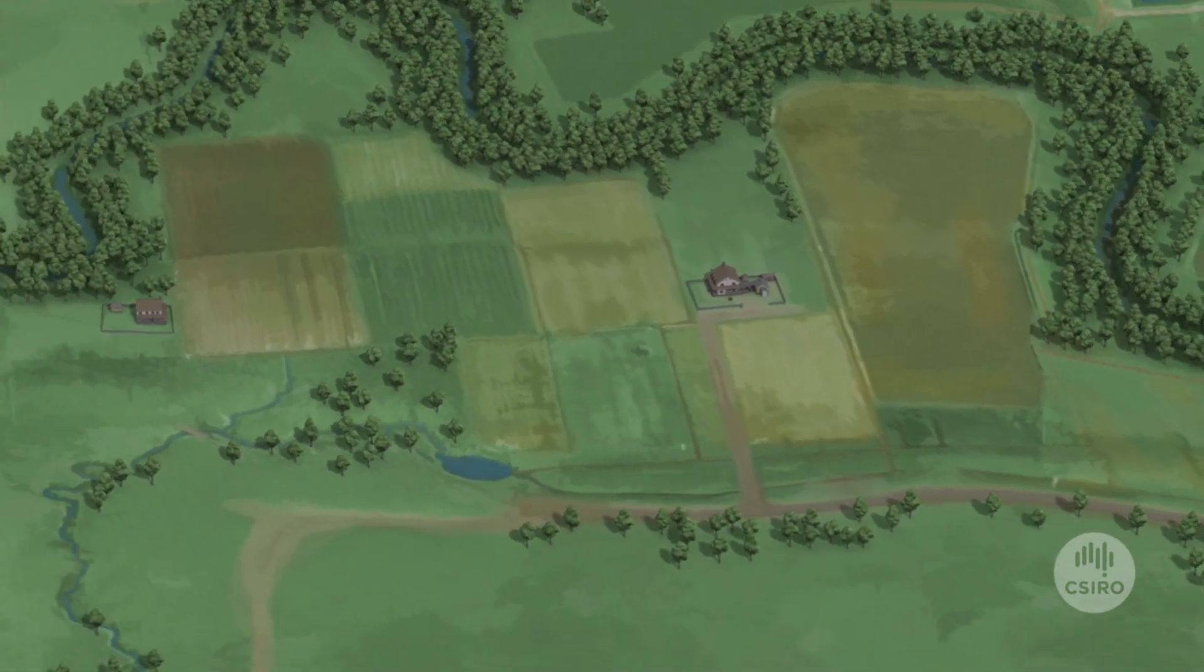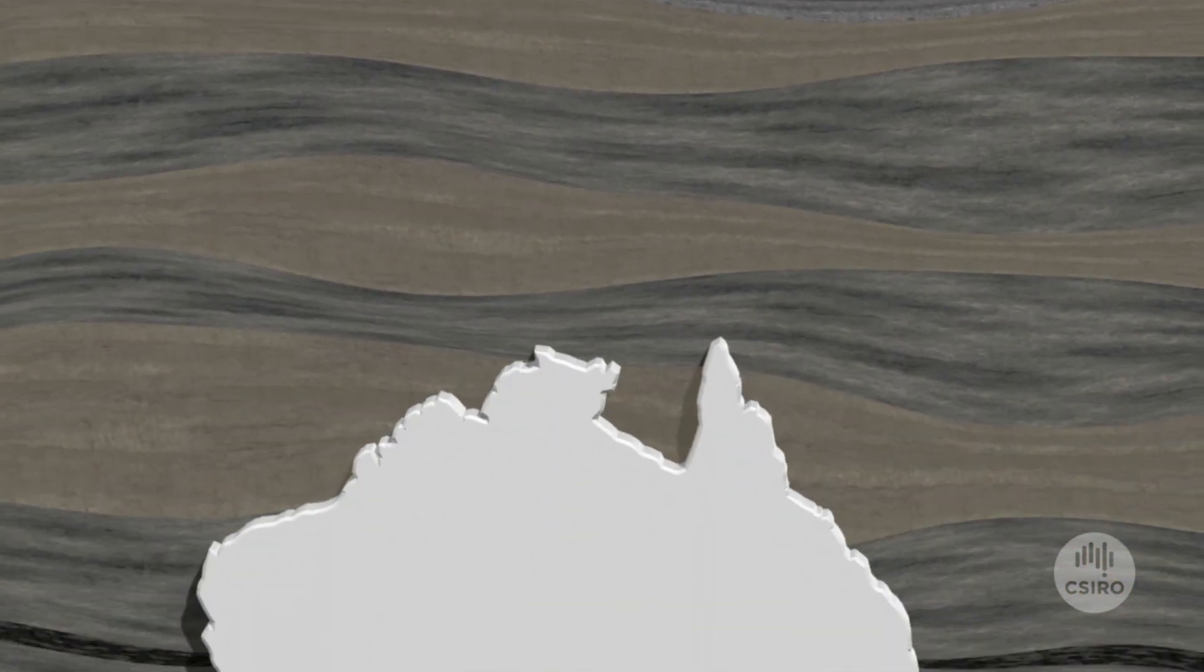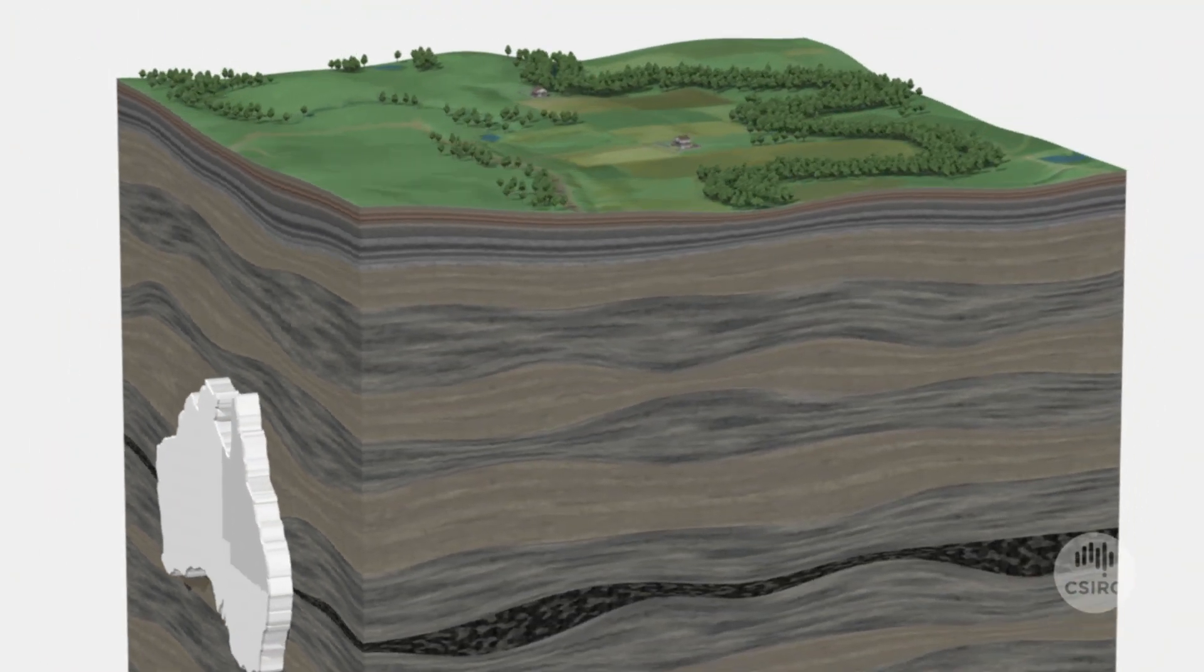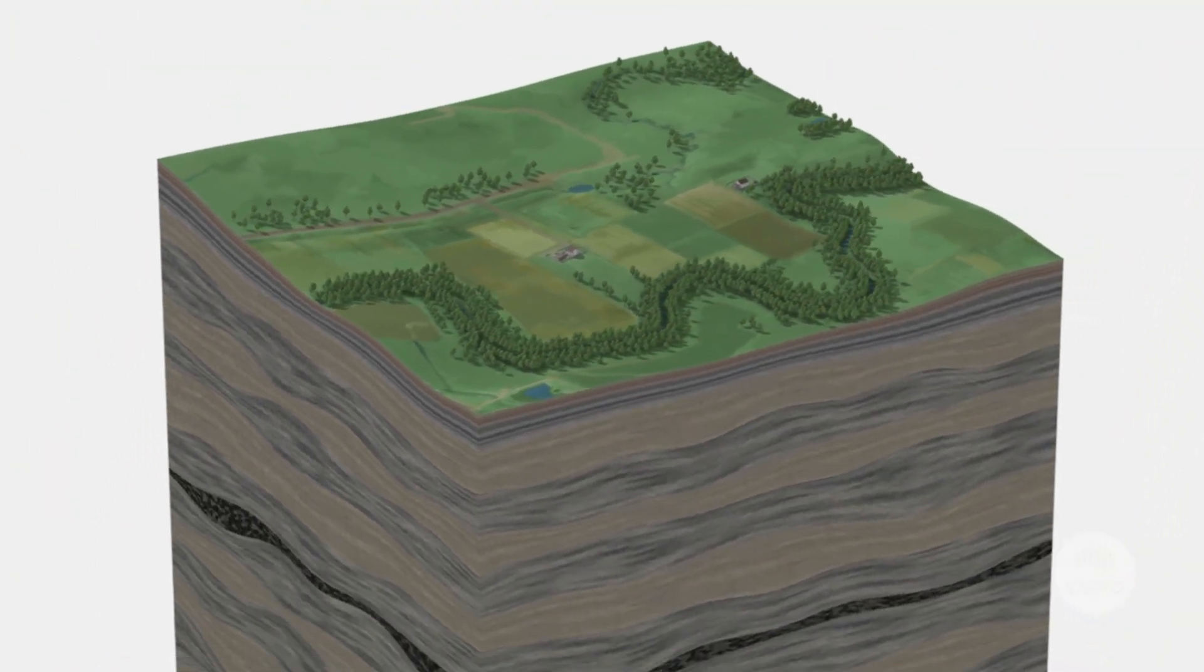Coal seam gas has been part of Australia's energy mix since it was first produced in Queensland in 1997, and development of the resource has been steadily increasing since then.